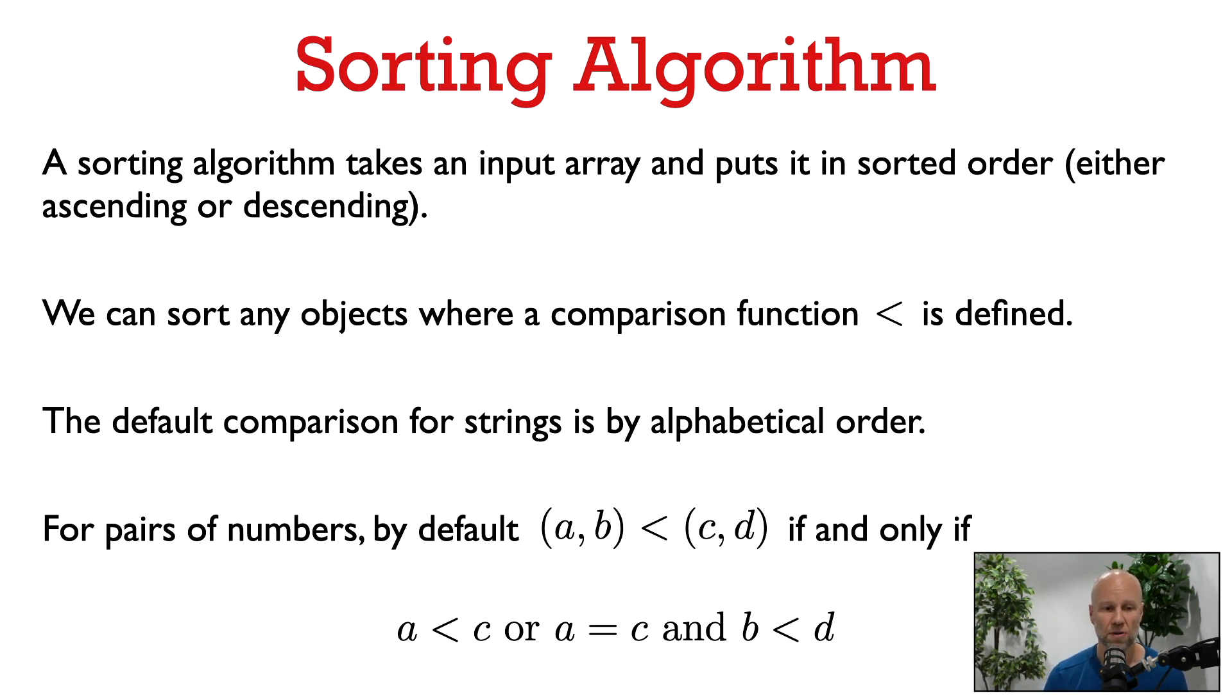In the sorting problem, we are given an arbitrary array, and we wish to either sort it in ascending order or descending order. Usually in the examples, I'm just going to focus on sorting in ascending order. In order to sort an array, we need a comparison function to be defined on its elements. That is, a function that tells us if one element is less than another or not.